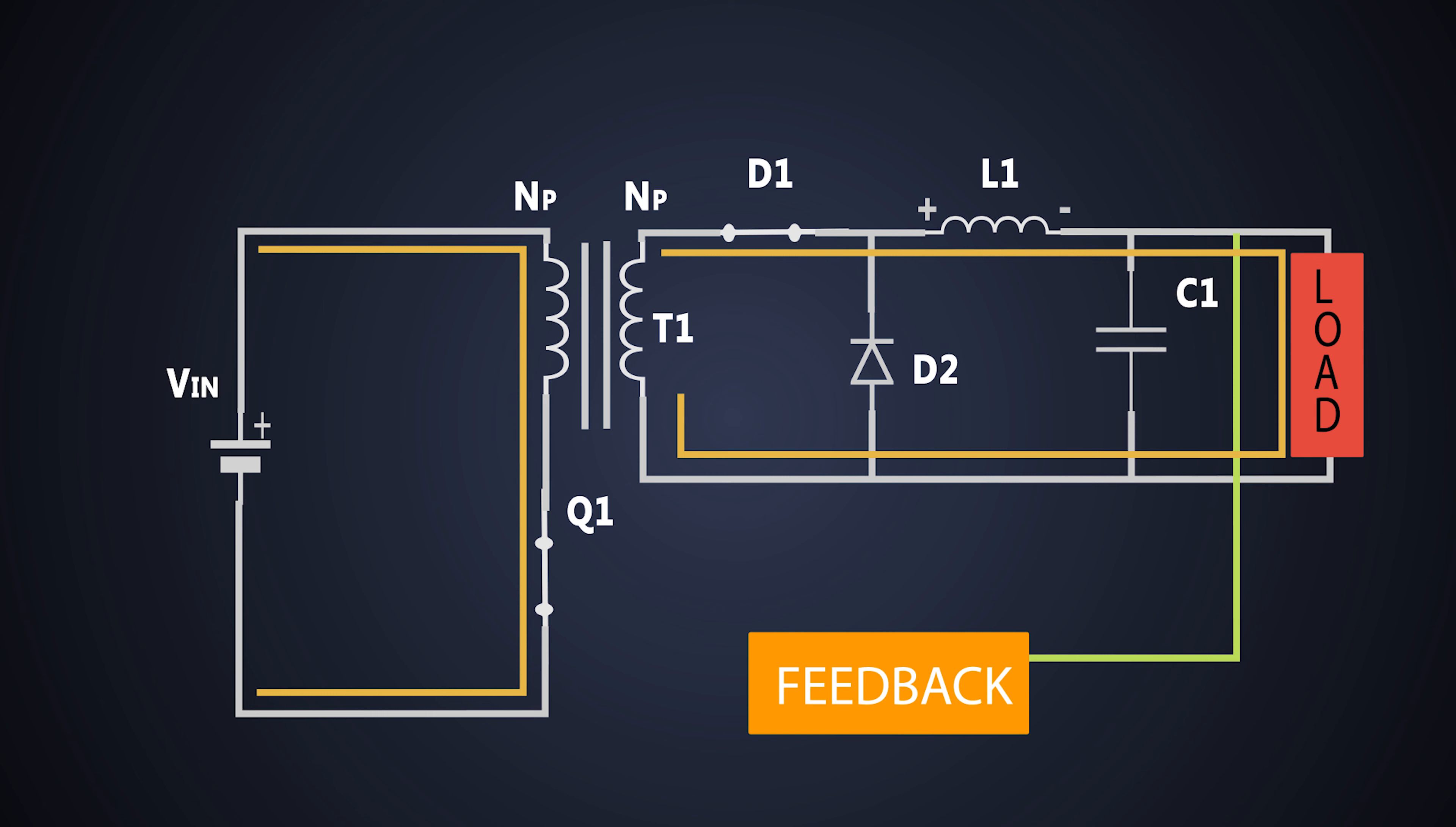The current flows through this LC filter and it provides the power to the load. When the MOSFET Q1 is turned off, the current in the primary and secondary winding falls to zero.